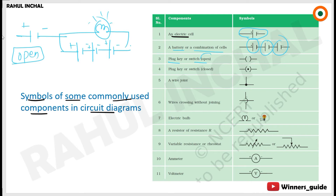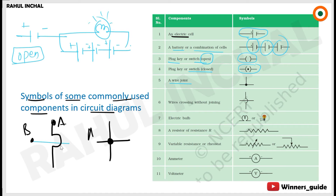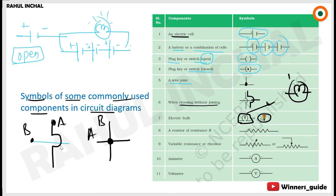A plug key or switch — if open, there is no dot in between; if closed, there is a dot. For a wire joint: if wire A and wire B are not touching, they cross without a dot; if they are touching and connected, a junction dot is placed in the middle. An electric bulb is represented by its symbol; if the bulb is lit, you can show it differently. This is a resistor or resistance.